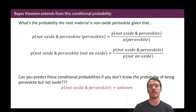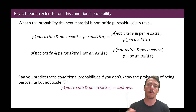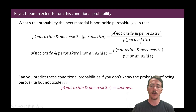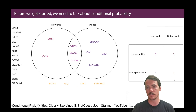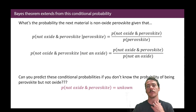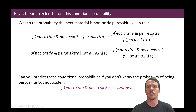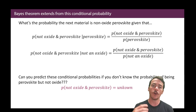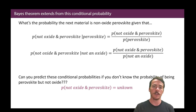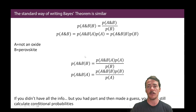Bayes' theorem extends out of this concept of conditional probability. All we were doing in those conditional probability calculations was looking at which ones met both criteria and dividing by which ones met one of the criteria. You're taking a ratio — something divided by another. These conditional probabilities are great, but they require that you know the numerator; you have to know the contingency table to start with. What if you don't know the probability of two conditions being met? That's where Bayes' theorem came in with a really simple proof.